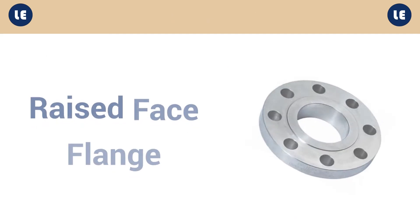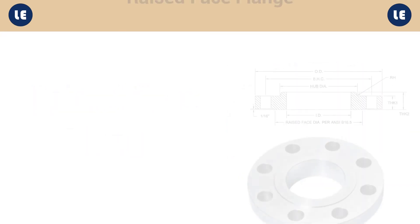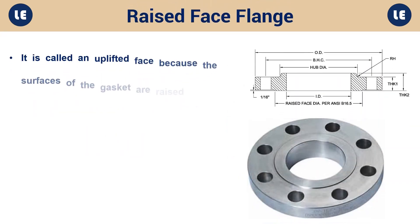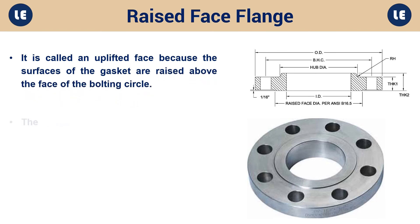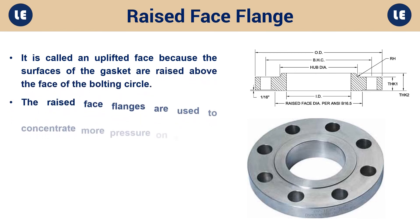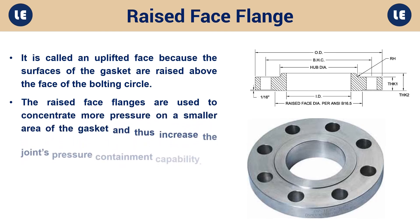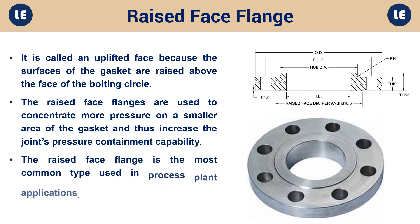Raised face flange: It is called an uplifted face because the surfaces of the gasket are raised above the face of the bolting circle. The raised face flanges are used to concentrate more pressure on a smaller area of the gasket, thus increasing the joint's pressure containment capability. The raised face flange is the most common type used in process plant applications.